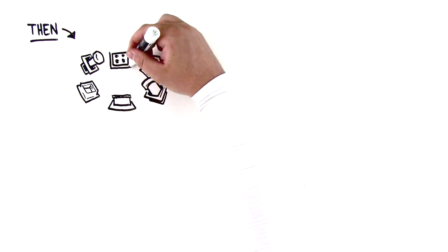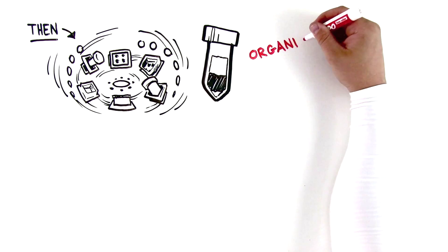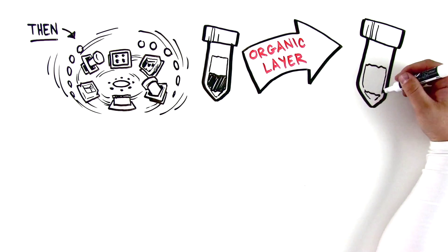Then, centrifuge the tube to separate the organic layer, and transfer the organic layer to another centrifuge tube for the next step.